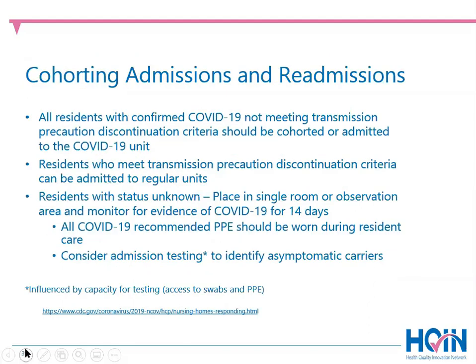If your facility is receiving new admissions or readmissions who had been confirmed to have COVID-19, you will need to carefully assess each resident for placement. If criteria for discontinuation of transmission precautions has not been met, they would be admitted to the COVID care unit. If they have met the criteria for discontinuation of precautions, they can be admitted to the regular unit. When admitting residents with unknown COVID-19 status, they would not be cohorted on the COVID care unit but placed in a single room or separate observation area to be monitored for evidence of COVID-19. Residents can be transferred out of the observation area to the main facility if they remain afebrile and without symptoms for 14 days after admission.